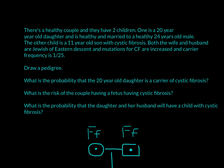For this problem, there's a healthy couple and they have two children. One is a 20-year-old daughter who is healthy, and she's married to a healthy 24-year-old male. The other child is an 11-year-old son with cystic fibrosis. Both the wife and the husband are Jewish and of Eastern descent, so mutations in this population for cystic fibrosis are increased. The carrier frequency is known to be 1 out of 25.